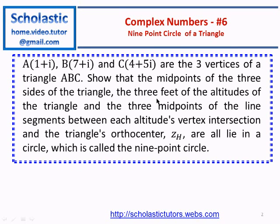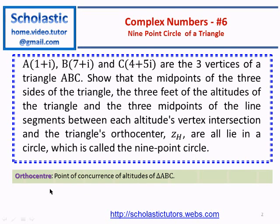Three midpoints, three feet, and three midpoints of the altitude's vertex intersection and the triangle's orthocenter. Let's see how we can do it. The orthocenter is defined as the point of concurrence of altitudes of triangle ABC.